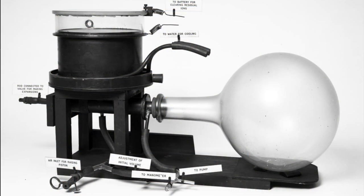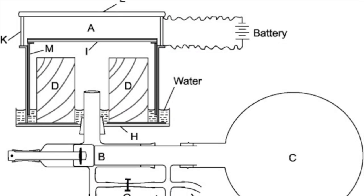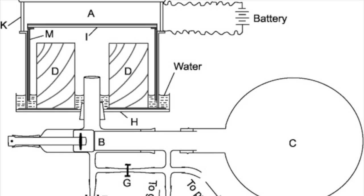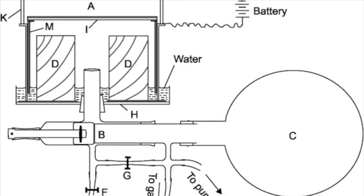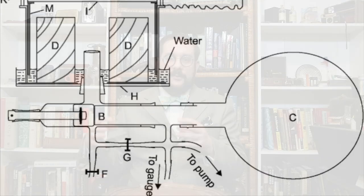Wilson's device was very similar. He had a cylindrical chamber with a sliding piston at the bottom, connected to a flask from which the air had been pumped. To create a cloud, you would open a valve between the evacuated chamber and the piston. The piston would drop, adiabatically cooling and expanding the air, and then the cloud would form.